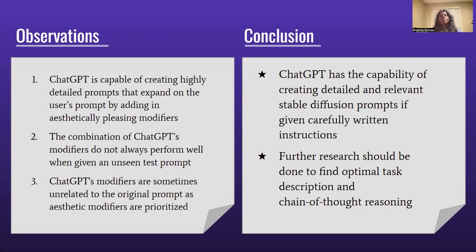From our experiments, we've made three key observations. The first is that ChatGPT is perfectly capable of creating highly detailed prompts that expand on the user's original prompt by adding in aesthetically pleasing modifiers. Second, the combination of ChatGPT's modifiers does not always perform well when given an unseen test prompt. The modifiers generated are either too generic or too detailed, which often confuses the Stable Diffusion model and causes it to output images of lower quality and relevance.